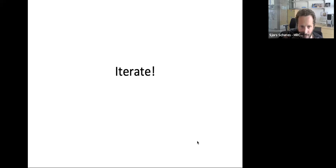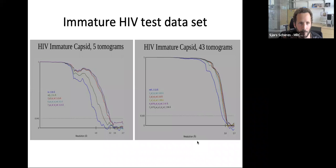These are preliminary results from Kino and Jasenko using the HIV immature dataset from John Briggs, which is a model dataset for subtomogram averaging. They get better results than what John could achieve using his existing algorithms.